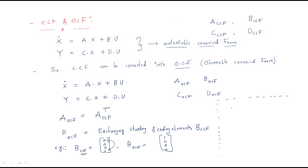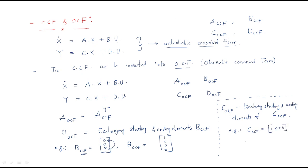Next for C — the same rule applies. The Observable Canonical Form C is obtained by exchanging the starting and ending elements of the Controllable Canonical Form C. For example, if C in CCF is [1, 0, 0, 0], then by exchanging starting and ending elements, it becomes [0, 0, 0, 1]. This is the relation between the controllable and observable canonical forms.